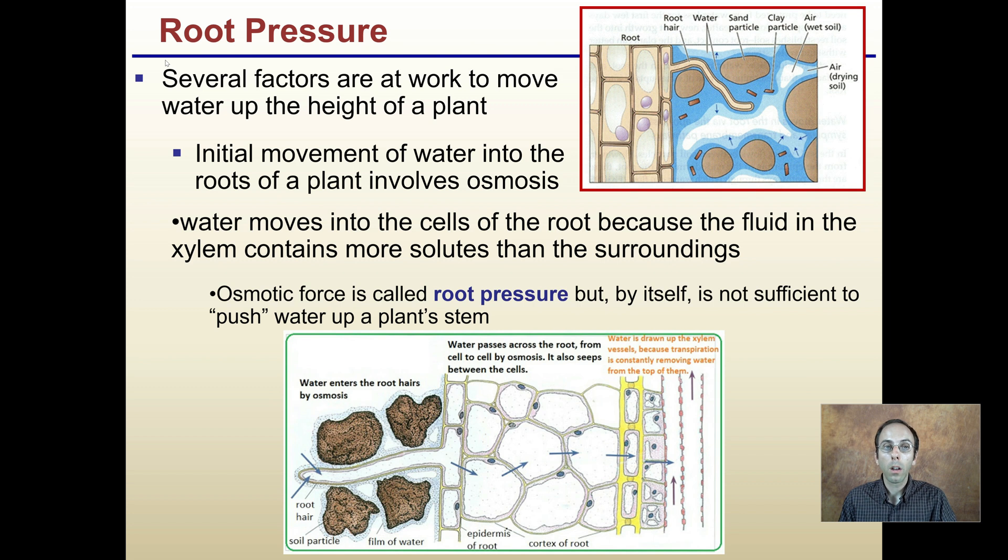Root pressure: several factors are at work to move water up the height of the plant. You can see water entering here at the root hairs, the very fine areas where water is coming in. The initial movement of water into roots involves osmosis. Water moves into the cells of the root because the fluid in the xylem contains more solutes than its surroundings. These solutes in the cell are more densely packed with sugars, nutrients, and ions. That water through osmosis naturally wants to move into those root hairs, ultimately entering the xylem and moving up through the plant. This osmotic force is called root pressure, but by itself it's not sufficient to push the water up the plant stem.